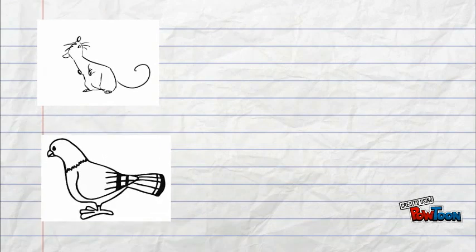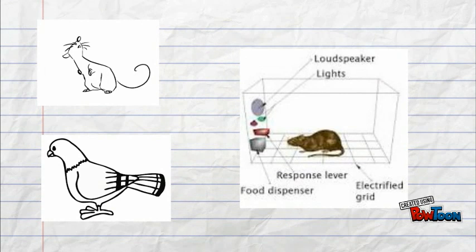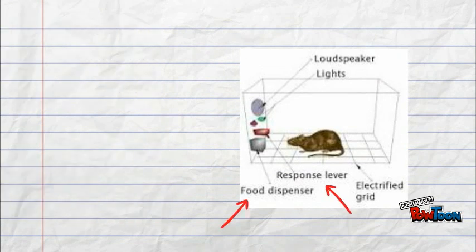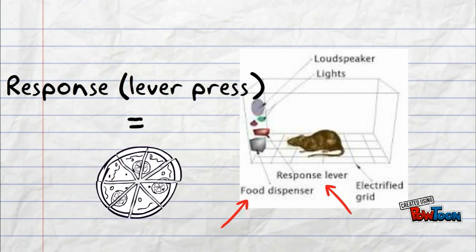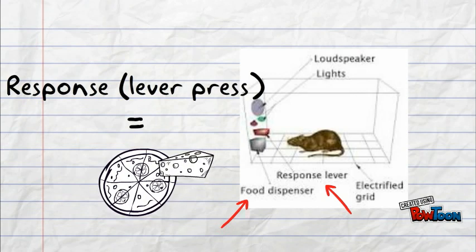In one of his first experiments, he placed rats in a box with a feeding tube connected to a lever. Once the rats realized that every time they pressed the lever they got food, Skinner noticed that the rats spent a great deal of time pressing the lever.